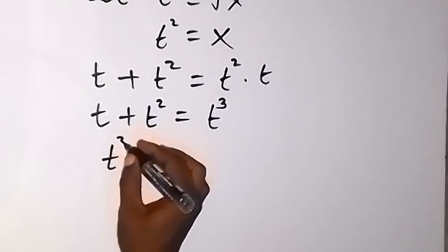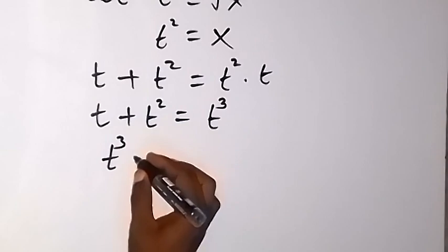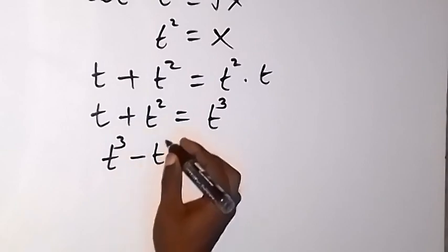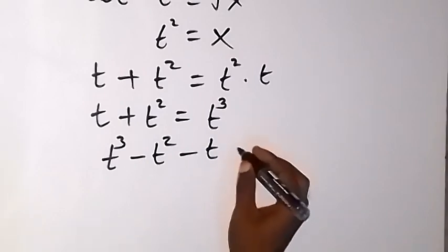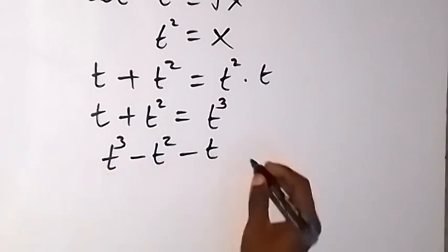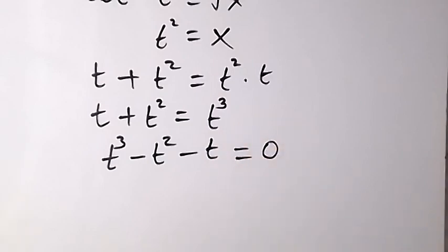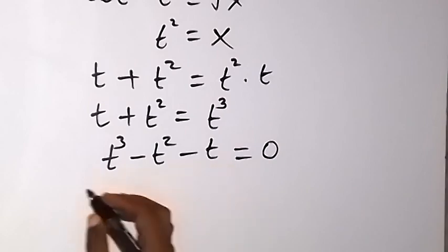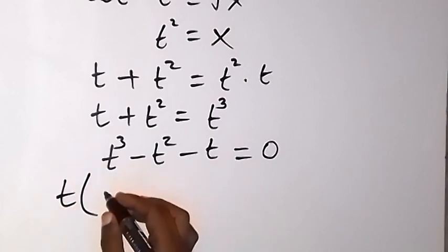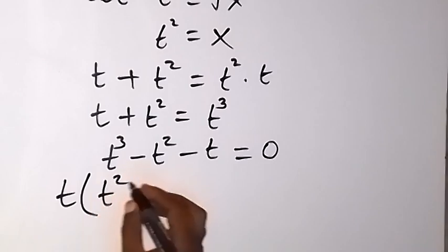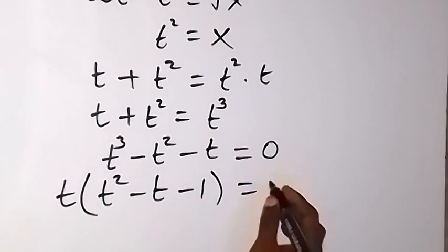We have t³, then bringing terms over: minus t², minus t, equals zero. We can factor t out since t is common. Bringing t out, we have t(t² - t - 1) = 0.